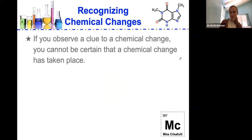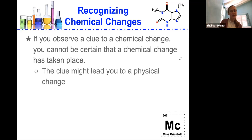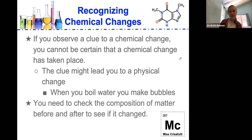If you observe a clue to the chemical change, like one of those four we just described, you cannot be totally certain that a chemical has taken place because the clue might lead you to a physical change. So for example, when you boil water to make bubbles, you need to check the composition of the matter before and after to see if it's changed. In order for it to be a chemical change, the matter composition has to change.